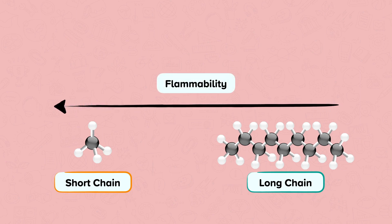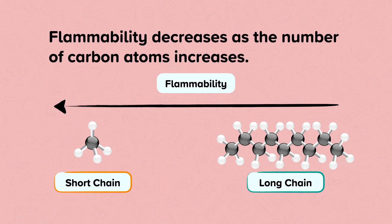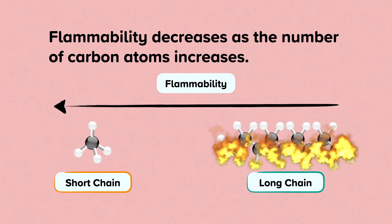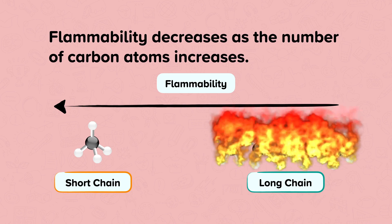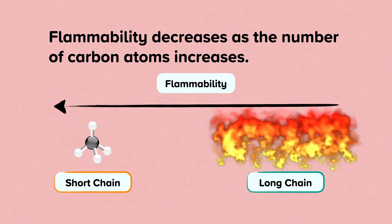Flammability is how easily a substance burns. Shorter hydrocarbons are more flammable because they have weaker intermolecular forces and lower boiling points. So flammability decreases as the number of carbon atoms increases. Short chain hydrocarbons will catch fire very easily, whereas long chain hydrocarbons will burn more slowly and produce lots of smoke.